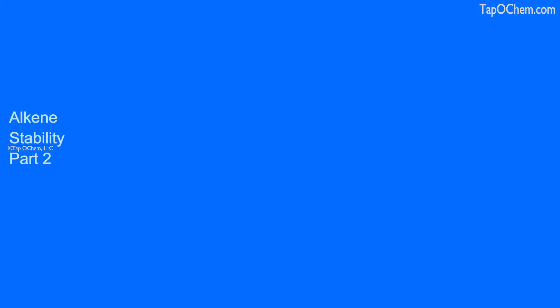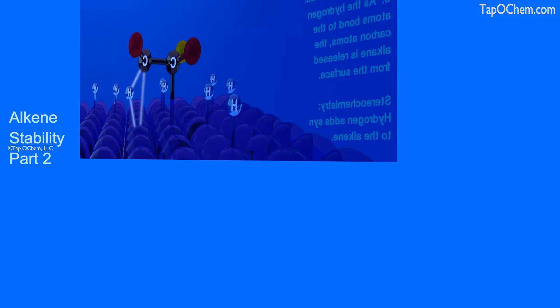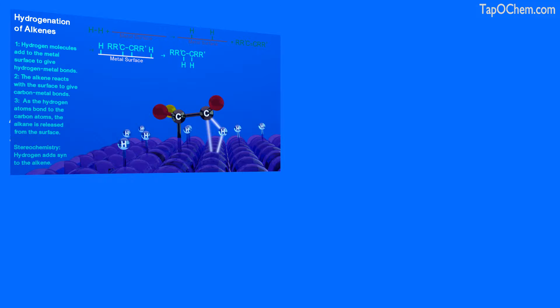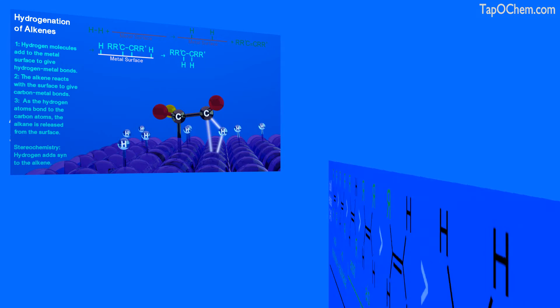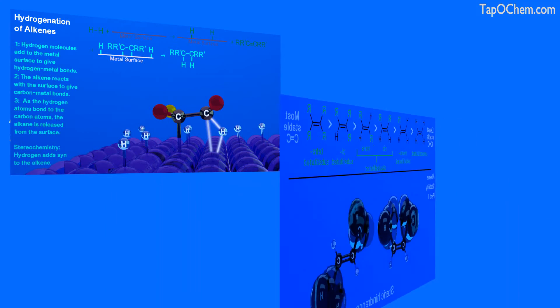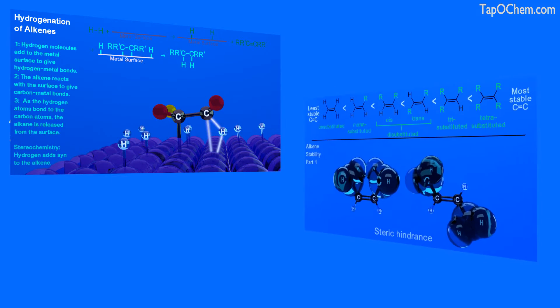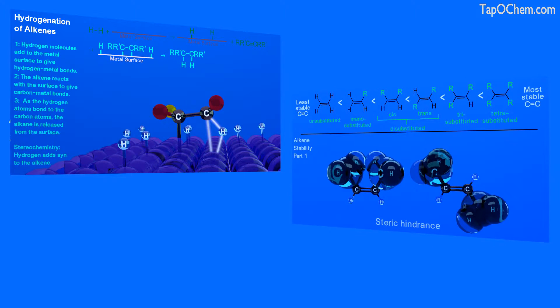Welcome to this animation on Alkene Stability and Heats of Hydrogenation. To visualize how a hydrogenation reaction occurs, please view the Hydrogenation of Alkenes animation. For a more detailed description of why these trends exist, please view Alkene Stability Part 1. Now let's start our discussion.